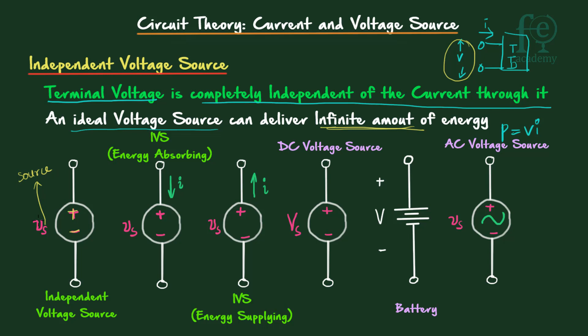Using a small letter 'v' means the voltage may be changing with respect to time. As per the sign convention, if the current is flowing into the plus terminal, the device is absorbing energy. If the current is going out of the plus terminal, that device is supplying energy. A voltage source is always supplying energy — it is an active element.